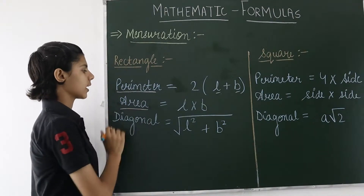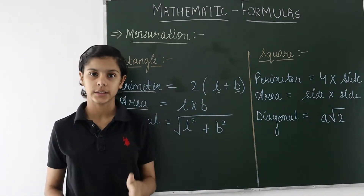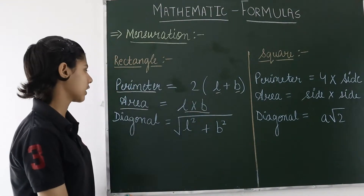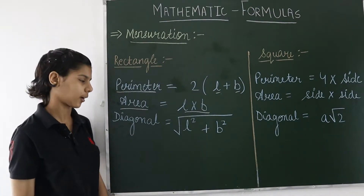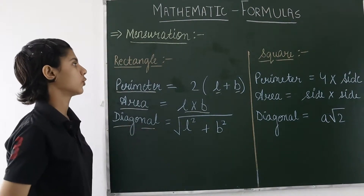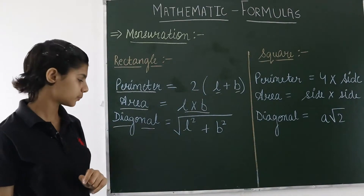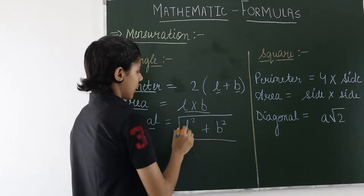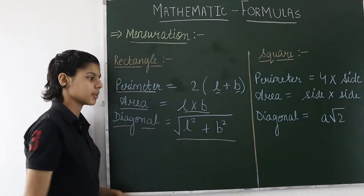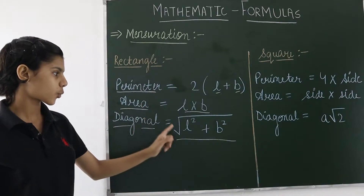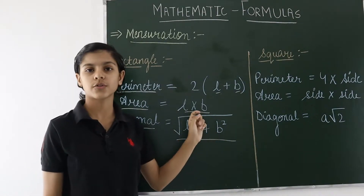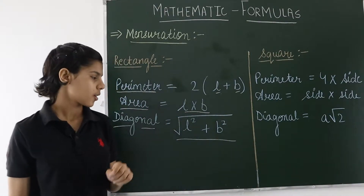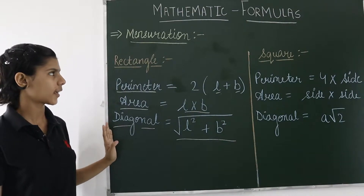Now for the area of rectangle — a rectangle always has a length and a breadth. If we multiply the length and the breadth, we get the area of the rectangle. For finding the diagonal of the rectangle, we have the formula: under root of (L squared plus B squared). We add the square of the length and the square of the breadth and calculate the square root to get the diagonal.